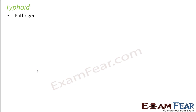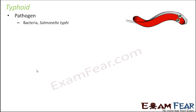Let us first look at the pathogen which causes typhoid. The pathogen is a bacteria called Salmonella typhi, and that is why it got the name typhoid from 'typhi'. So Salmonella typhi is the bacteria which causes typhoid.